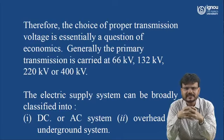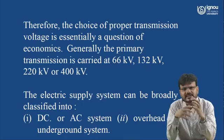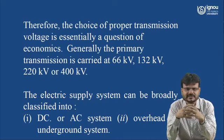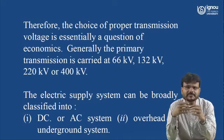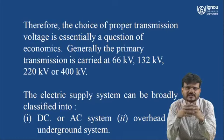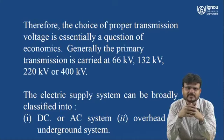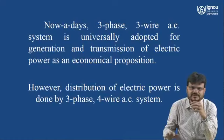Generally, primary transmission is carried at 66 kV, 132 kV, 220 kV, or 400 kV. The electric supply system can broadly be classified into DC or AC systems, and power can be transmitted by two means: the overhead system — using towers and ACSR conductors — or the underground system where cables are placed inside the ground.